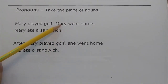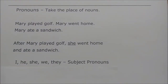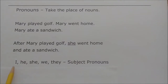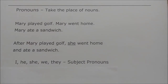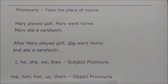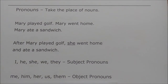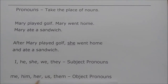Some pronouns can only be used as subjects in a sentence — the doers: I, he, she, we, and they. These can never be used as direct objects or objects of the preposition. On the other hand, these pronouns are used only as direct objects or objects of the preposition: me, him, her, us, and them. You will never find these used as subjects. Notice the connection: I/me, he/him, she/her, we/us, they/them.